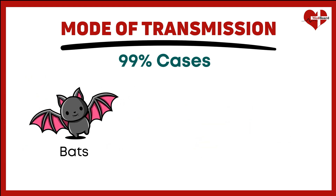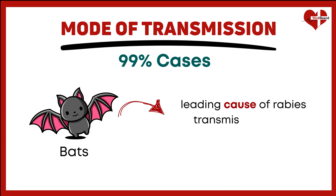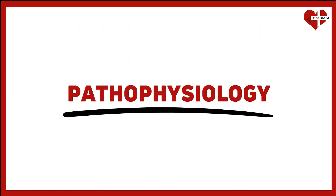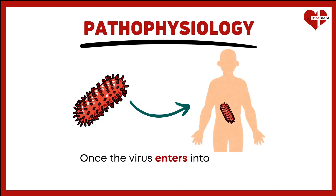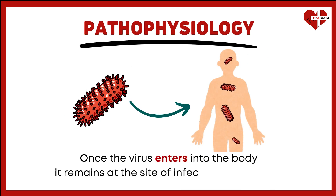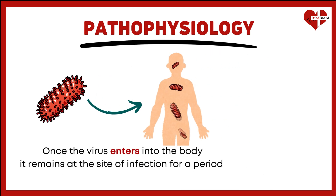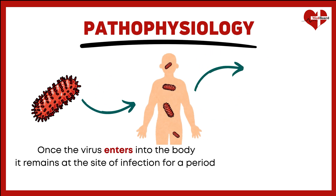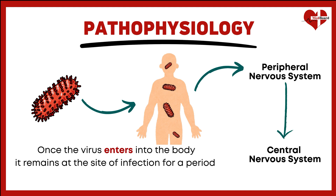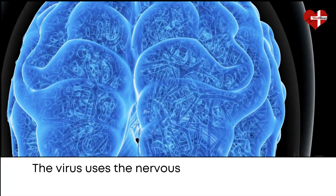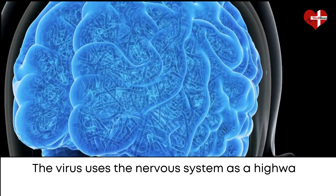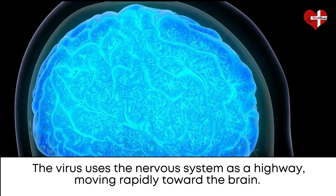Bats, in particular, have become a leading cause of rabies transmission in the Americas. Once the rabies virus enters the body, it remains at the site of infection for a period, before traveling via the peripheral nerves to the central nervous system. The virus uses the nervous system as a highway, moving rapidly toward the brain.